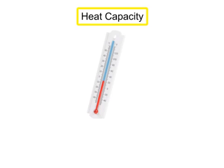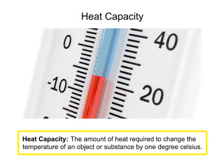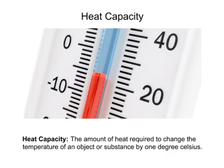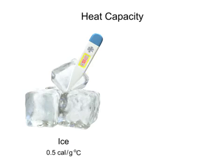Heat capacity is the amount of heat required to change the temperature of an object or substance by 1 degree Celsius. The heat capacity of water varies depending on its phase. As solid ice, the heat capacity of water is 0.5 calories per gram for every 1 degree Celsius, which means it takes half a calorie to raise the temperature of 1 gram of ice 1 degree Celsius.